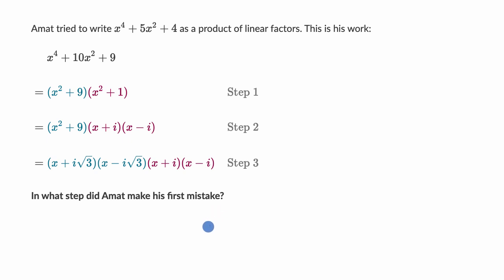All right, now let's work through this together. So we're starting with x to the fourth plus 10x squared plus 9, and it looks like Amat tried to factor that into x squared plus 9 times x squared plus 1. And this indeed does make sense because if we said that u is equal to x squared...